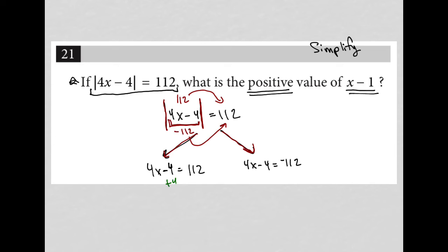So let's solve this. I'm going to add 4 to both sides here. I'm left with 4x equals 116. I divide both sides by 4.